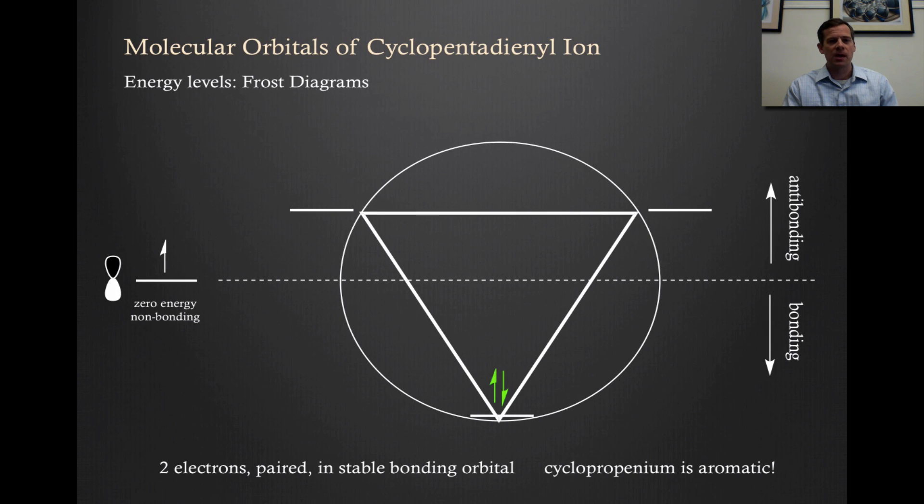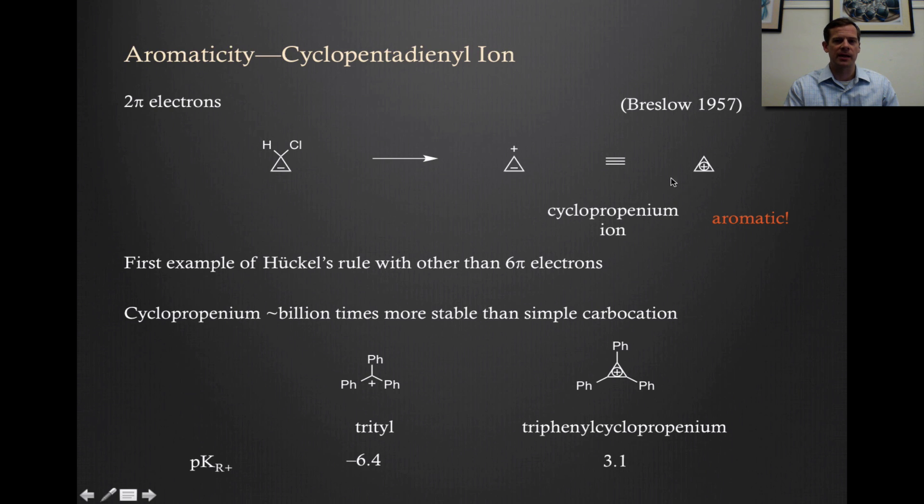I would just point out that this was very surprising because not only are we dealing with a cation, which tends to be very reactive, but we're dealing with a system with an enormous amount of ring strain to get these three carbons to bond together. And then in addition, you're asking it to be cationic. So it wasn't clear before this was made that this even could exist, but it turns out that not only can it exist, but it is actually quite stable. There are examples of cyclopropenium ions that are very stable, even in water, aqueous solutions. Again, that's the power of aromaticity. It can override a lot of very energetically unfavorable situations because the aromaticity itself is so favorable.